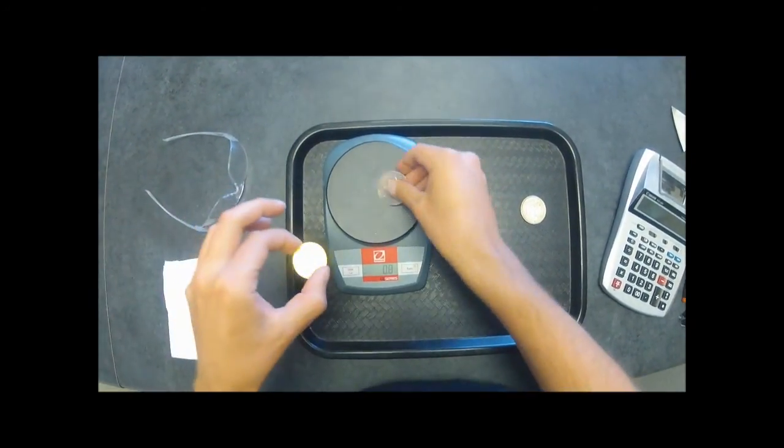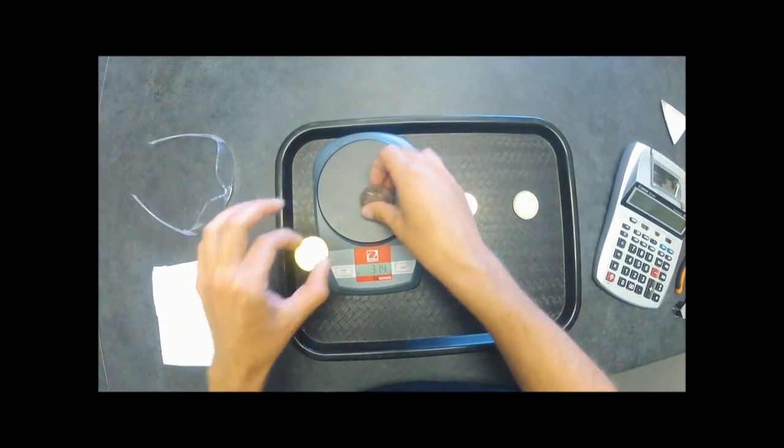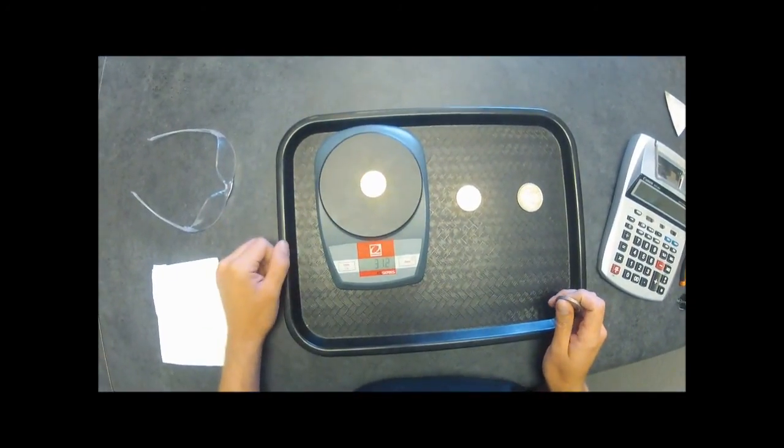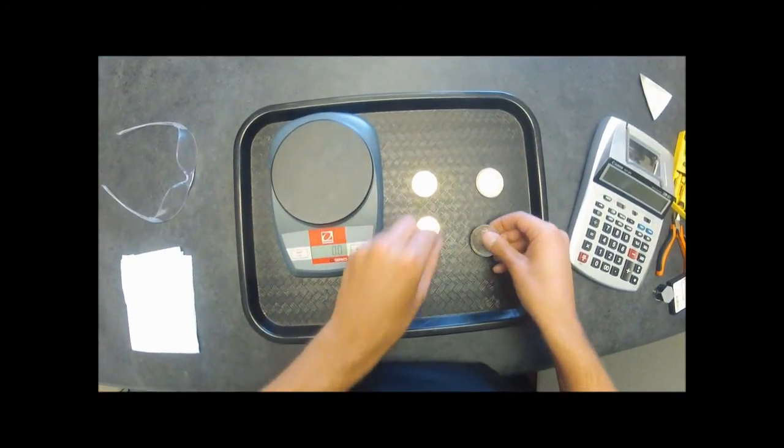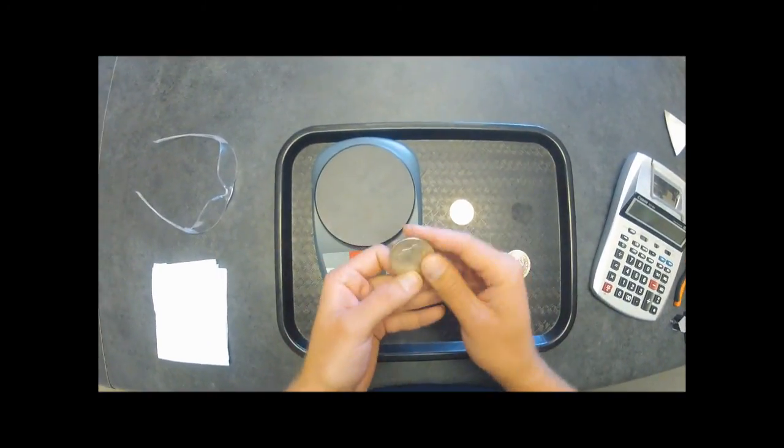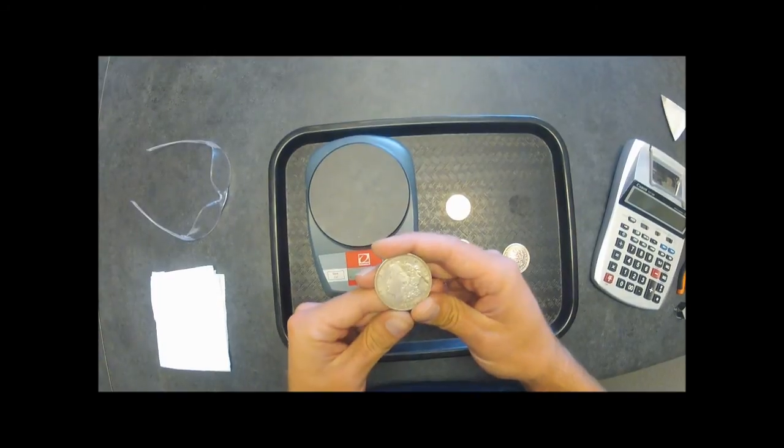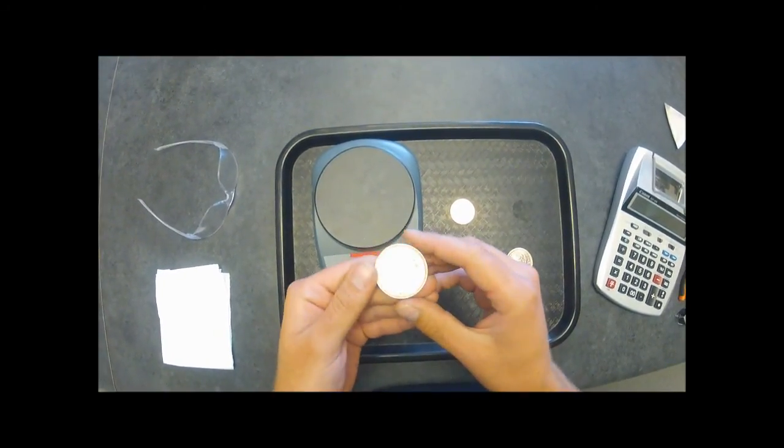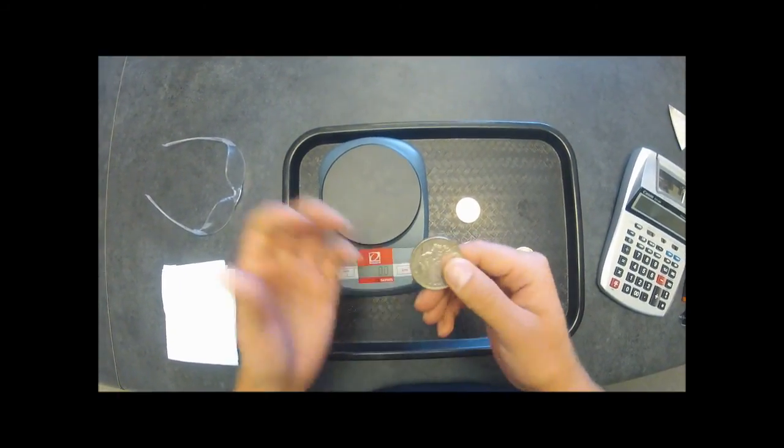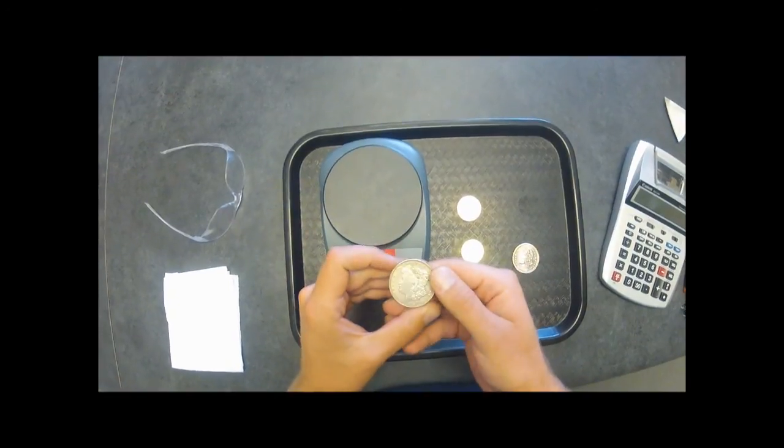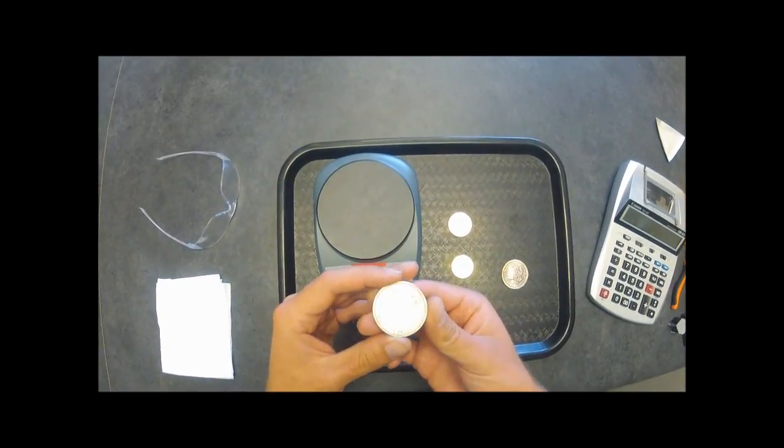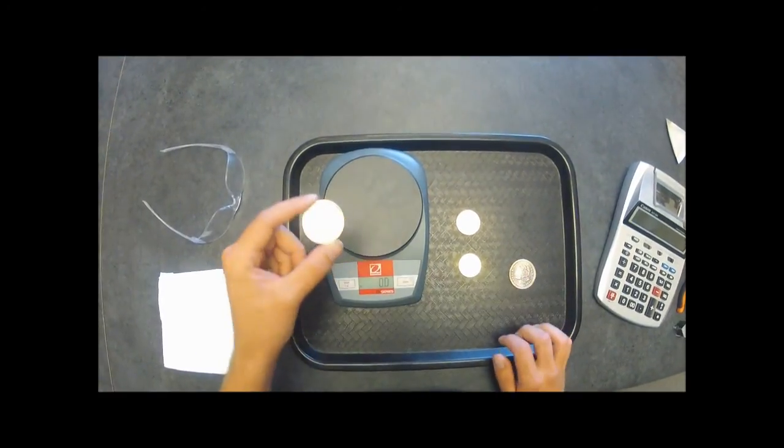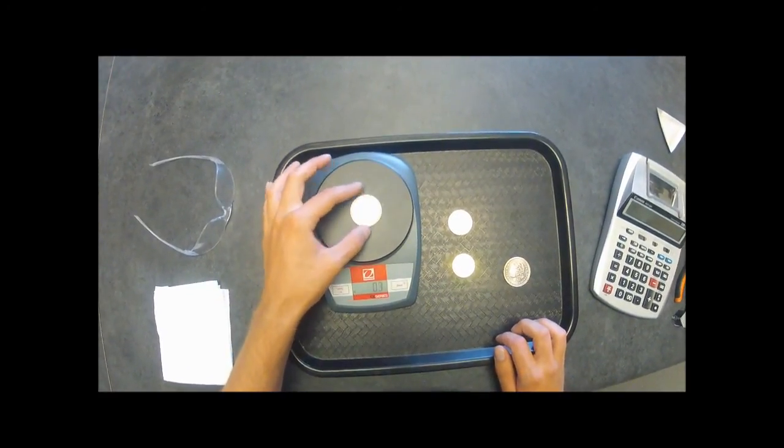They still weigh exactly the same, 31.2 and 31.2. And then the Morgan silver dollar - it's actually only 90 percent silver, and it's just typical coin silver. That's what all the coins used to be before 1964. Well, at least the dimes, quarters, and half dollars. So this one should weigh about 26.7 to 26.8 grams.